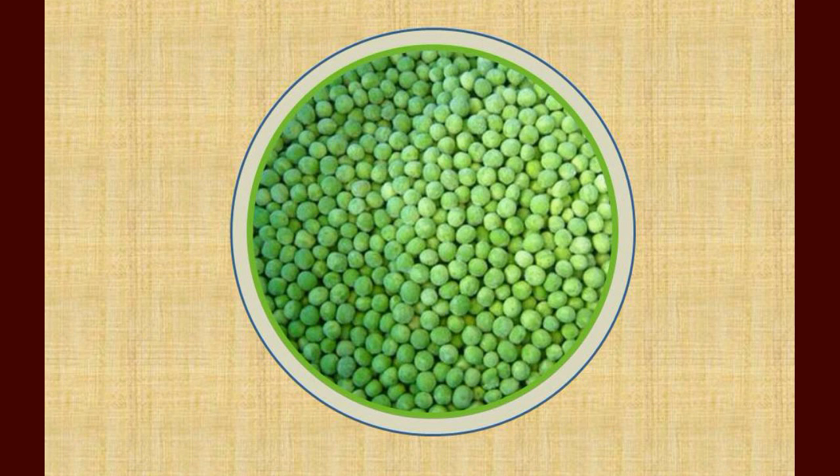So, for example, every pea on the plate, representing a conceivable universe, contains the truths that butter melts in a hot pan and that helium has two protons. The difference between all of these peas is that they each contain different conceivable ideas that we don't know to be true yet. Each pea represents the way that the universe could possibly be.